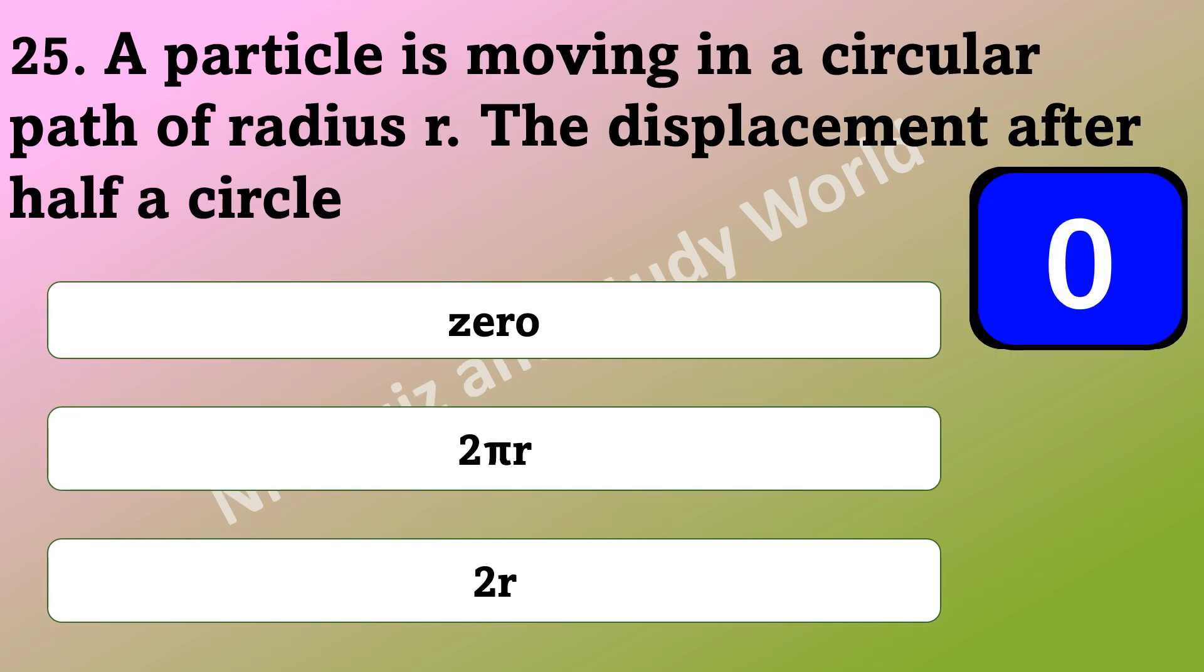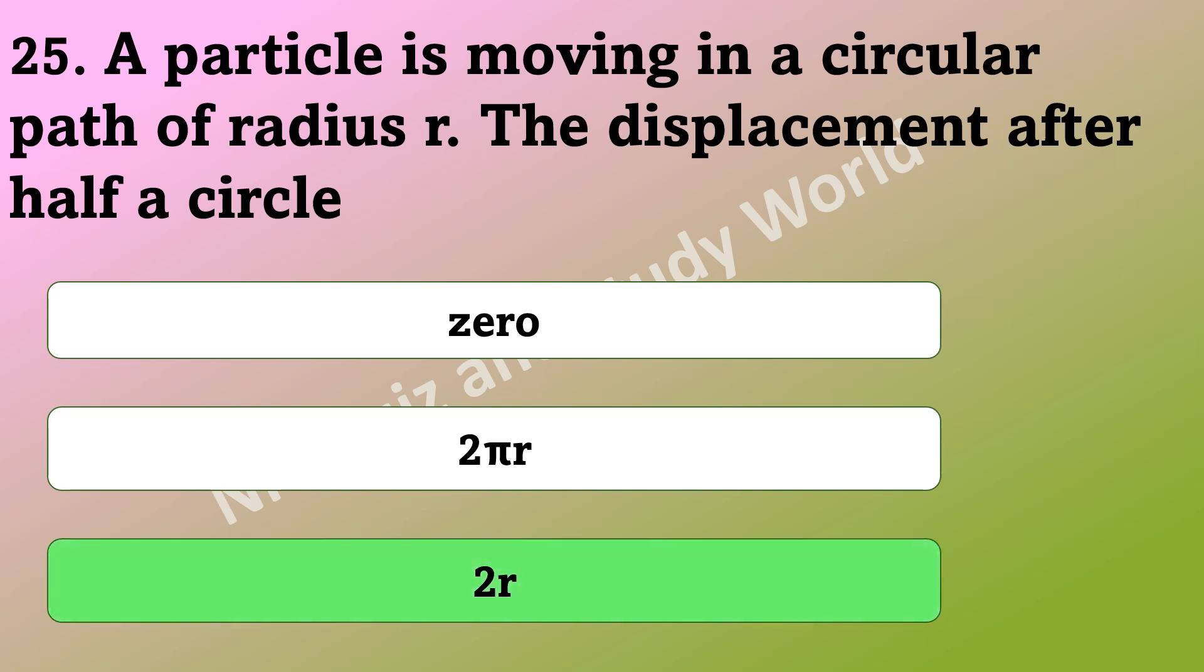A particle is moving in a circular path of radius r. What is the displacement of the particle after half a circle? Is it zero, 2 pi r, or 2r? The answer is the displacement is 2r.